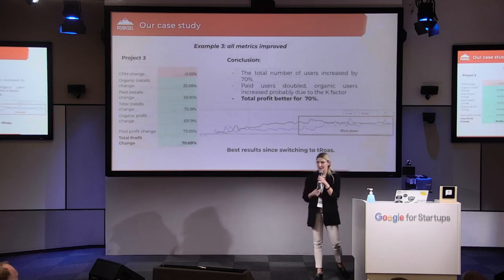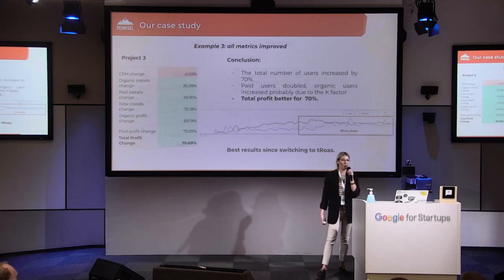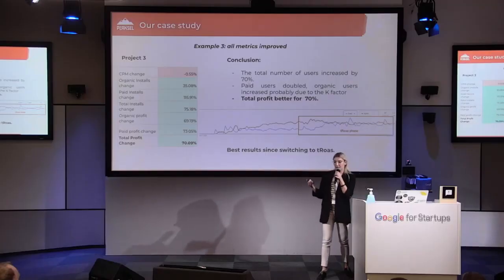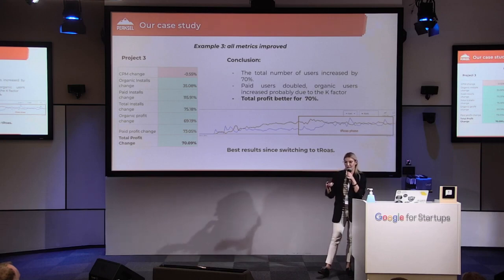The last example is where all metrics improved — no cannibalization, no eCPM changes. We almost doubled paid users. Organic users also increased, probably due to the K-factor. And finally, the total profit was better by 70%. This is our best result since we switched to TROAS.